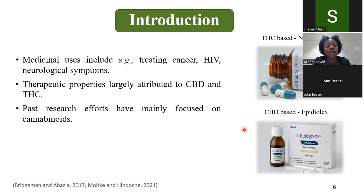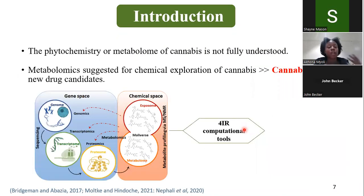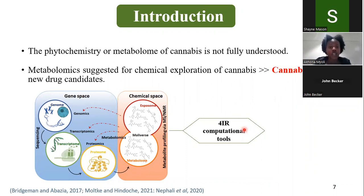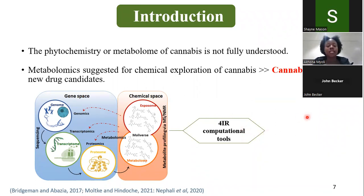Given these examples, one can see that past and current research mainly focuses on cannabinoids. However, the phytochemistry or metabolome of cannabis is not fully understood nor fully explored. When considering cannabis as a medicinal plant, it is important to note that there are other chemical classes within this plant beyond cannabinoids. Therefore, the chemical exploration of cannabis remains paramount. Metabolomics has been suggested for this exploration and has been coined the term cannabolomics, with the ultimate goal of revealing new drug candidates within this plant.